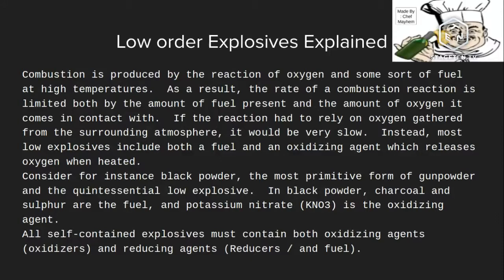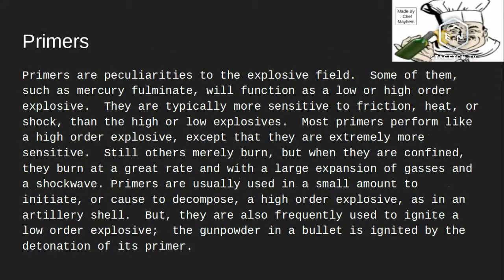The third type of explosives are primers. Primers are particularly interesting — some of them, such as mercury fulminate, function as a high-order explosive. They are typically more sensitive to friction, heat, or shock — essentially any external stimulus. Most primers perform like a high-order explosive but are far more sensitive. Some merely burn, but when confined they burn at a great rate with a large expansion of gases and a shockwave. Primers are usually used in small amounts to initiate or cause decomposition of a high-order explosive, such as in an artillery shell, or to ignite a low-order explosive — the gunpowder in a bullet is ignited by the detonation of its primer.